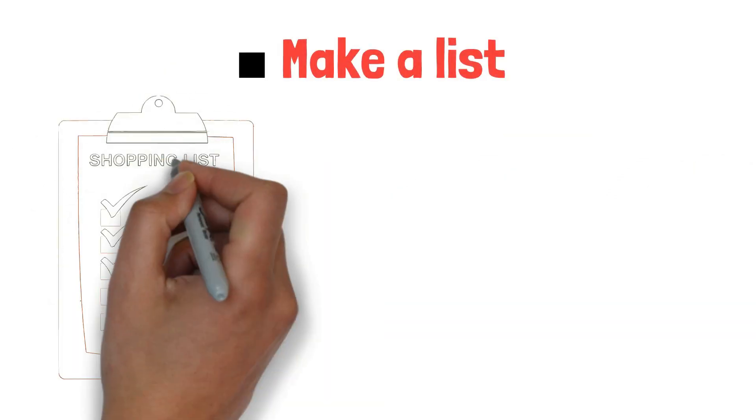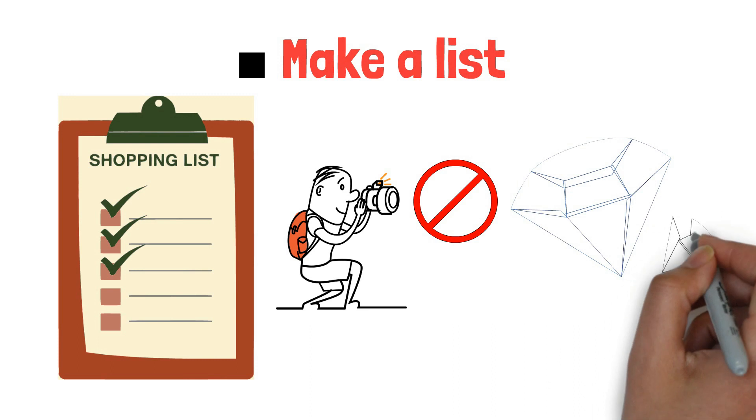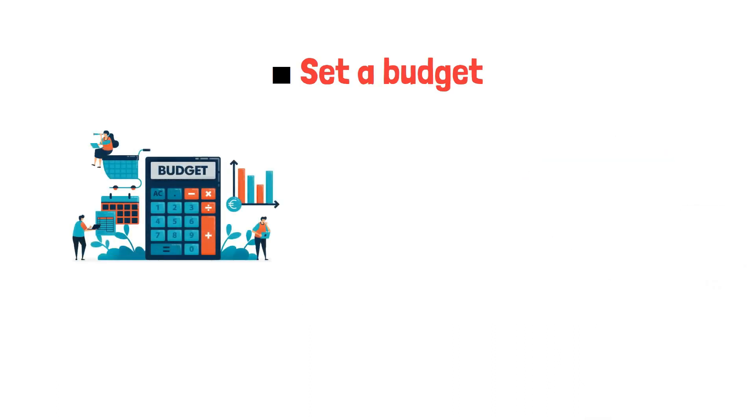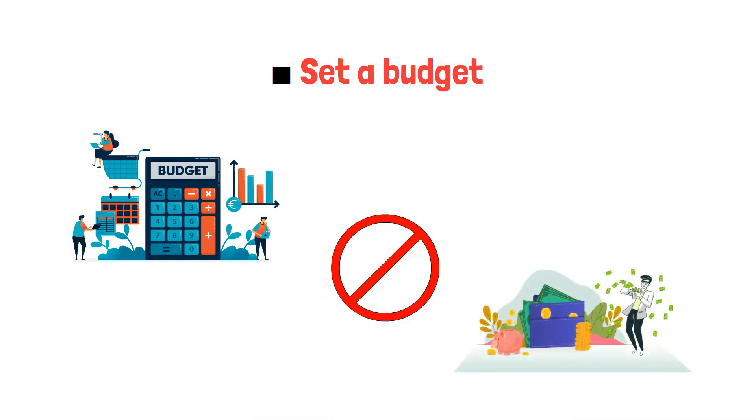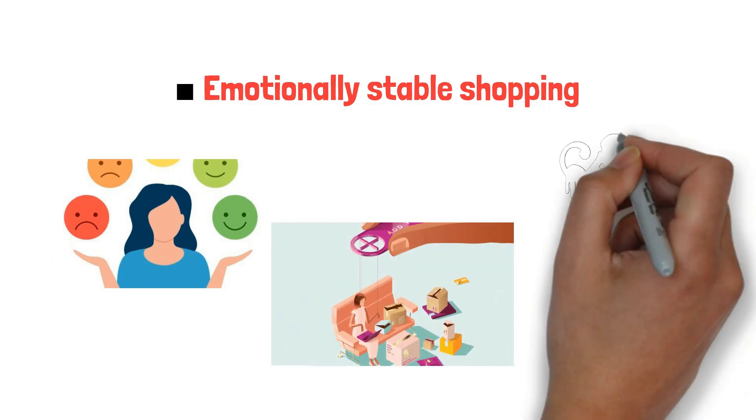Make a list. Before shopping, list the items you genuinely need. This will help you stay focused and prevent you from buying unnecessary items. Set a budget. Establish a budget for your shopping trip and commit to it. This will prevent overspending on items that are not essential. Emotionally stable shopping: Avoid shopping when you feel emotional, whether anger, sadness, or stress. Emotional states can cloud your judgment and lead to impulsive decisions you may regret later.